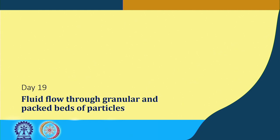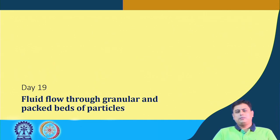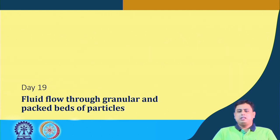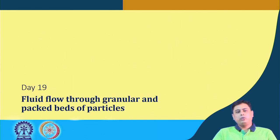We have discussed the concept of the Ergun equation, the Kozeny-Karman equation, the Burke-Plummer equation, their applicability and the range of applicability — when we should use each equation — and different parameters like what is the particle Reynolds number and how we define particle Reynolds number in the Ergun equation.